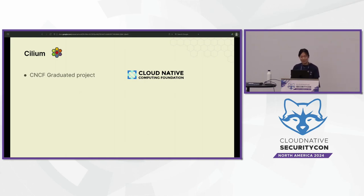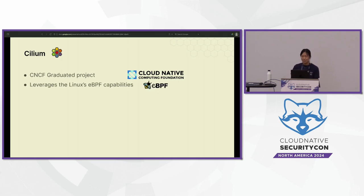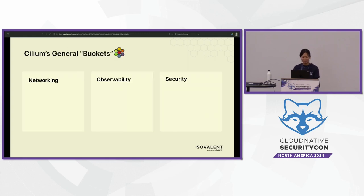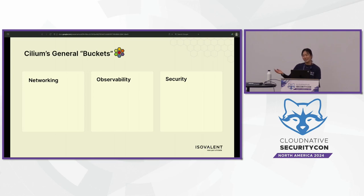Cilium is a CNCF graduated project — graduated being the final step after Sandbox — so it has been around the ecosystem for a while, and it leverages eBPF capabilities. It's been described as a Swiss Army knife because it does a lot, and it's not just the CNI anymore, which stands for Container Network Interface. When I first started learning Cilium, I wish someone had shown me an organized overview instead of just throwing me at the docs.